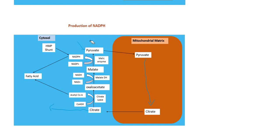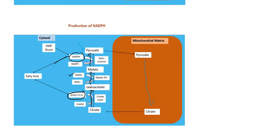In the cytoplasm, citrate is cleaved to regenerate acetyl-CoA and oxaloacetate. Oxaloacetate is then converted to malate using NADH, and malate is converted to pyruvate producing NADPH. This NADPH is critical for fatty acid synthesis. Pyruvate re-enters the mitochondria and the cycle repeats, continuously supplying acetyl-CoA and NADPH.